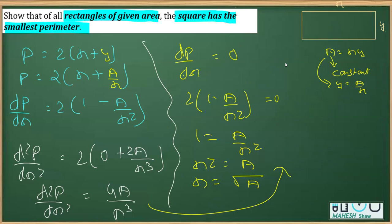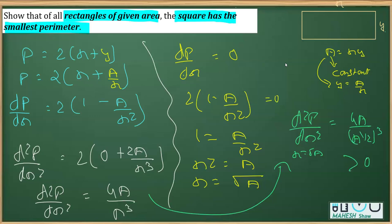Then from here, we are going to show that d square P by dx square is greater than 0. Placing x as, if I place x is equal to under root a, placing this is 4a over, this is x cube, that means a raised to the power half whole cube. So anyway, this is going to be greater than 0, hence minima at x is equal to under root a.